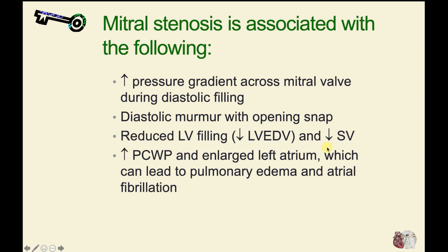Because less stroke volume is ejected, there is an increase in left atrial pressure as blood backs up into the left atrium, and the left atrium must generate very high pressures to eject blood across that stenotic valve. This can lead to a large increase in pulmonary capillary wedge pressure, an enlarged left atrium, pulmonary edema, and atrial fibrillation. The atrial fibrillation results because stretching and enlarging the left atrium triggers changes in ionic channel function, which can precipitate atrial fibrillation.